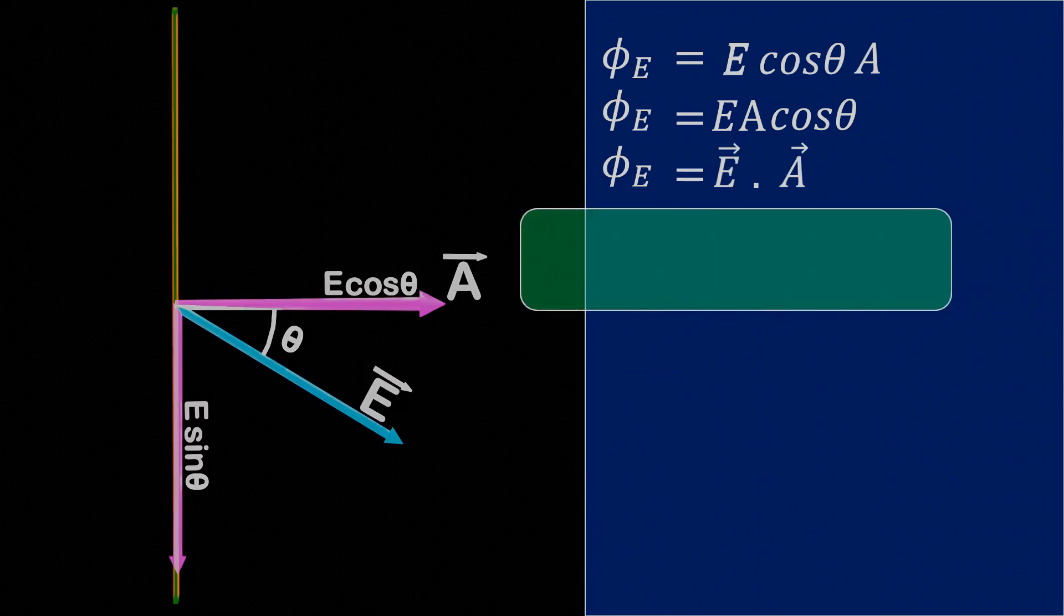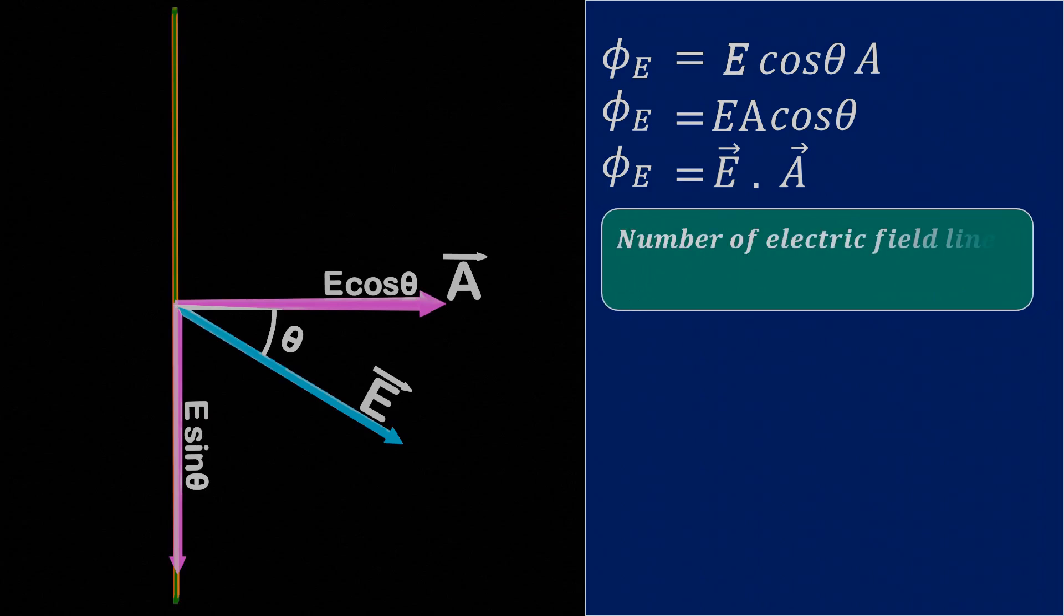So we can simply define electric flux as the number of electric field lines passing through a given area. Electric flux indicates the quantity of electric field lines passing through a given surface, and is a scalar quantity.